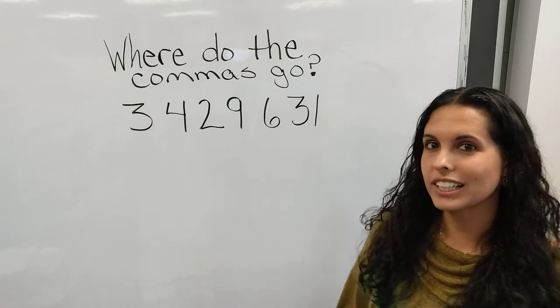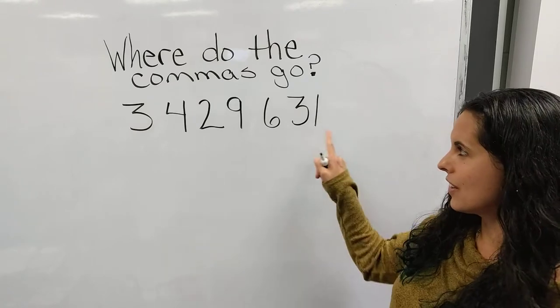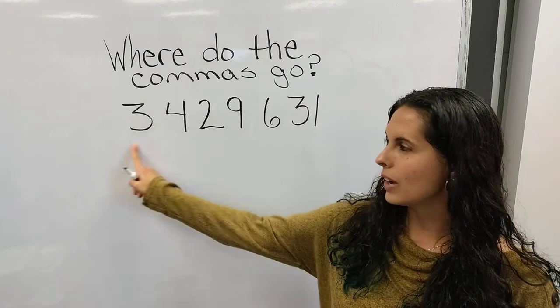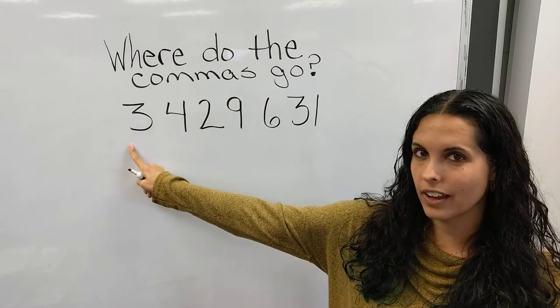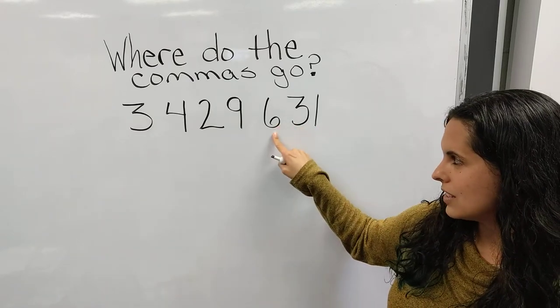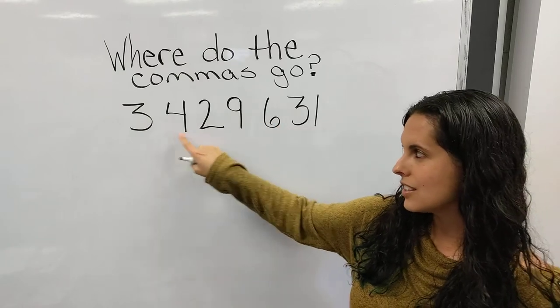So traditionally when we think of where the commas go, we're going to start on this side in the ones place and we're going to work our way this way to figure out where the commas go. So ones, tens, hundreds, thousands, ten thousand, hundred thousand, million.